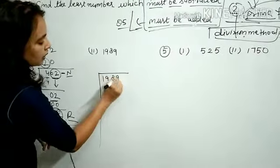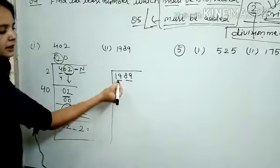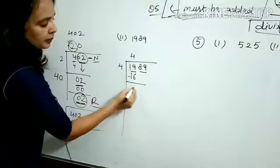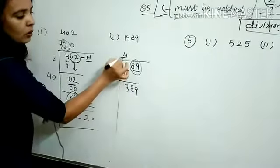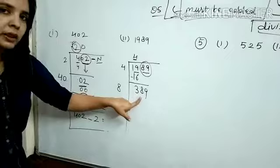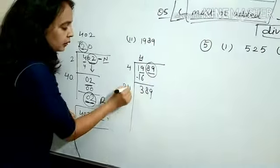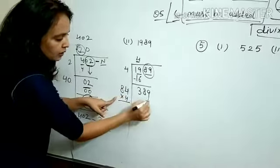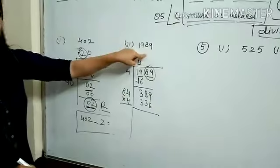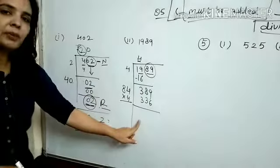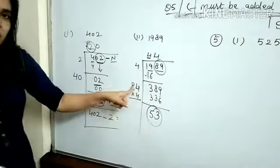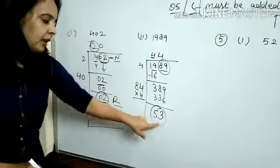Now try 1989. Make pairs. Check: 4×4=16, 5×5=25, so take 4. Subtract: 16 from first group, remainder 3. Bring down pair 89. Double the quotient 4 to get 8. Try 84×4=336, but 85×5 is too large, so try 4: 84×4=336. Remainder after subtraction is 53. This remainder must be smaller than the divisor — if not, try another number.